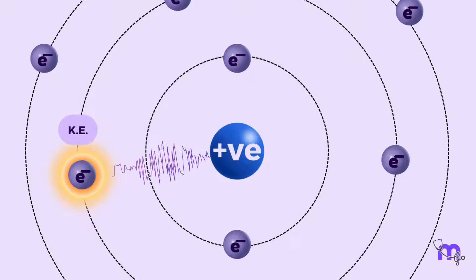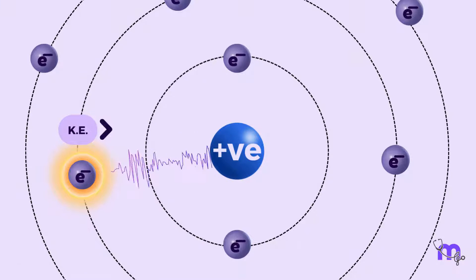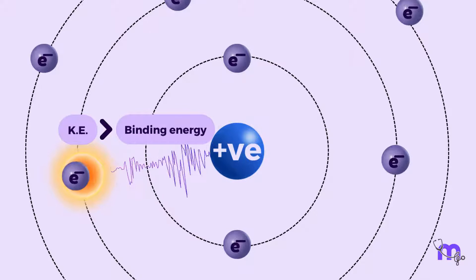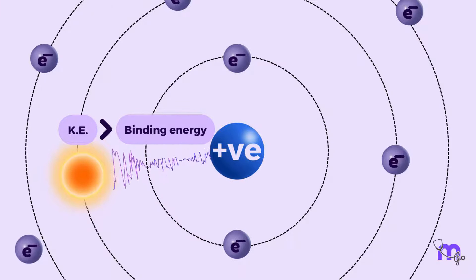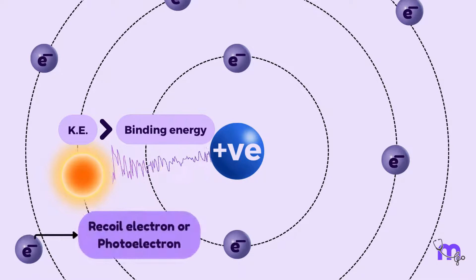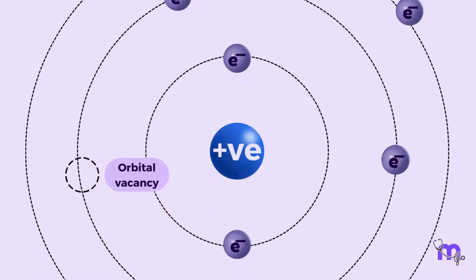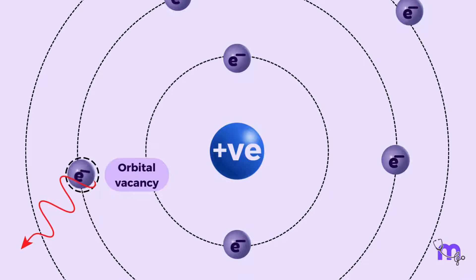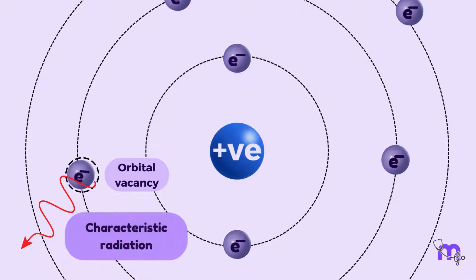The kinetic energy imparted to the electron is more than the binding energy, causing the electron to eject out of the atom. It is then called the recoil electron or the photoelectron. An orbital vacancy is now created, which is filled by an outer shell electron of a higher energy state. During this reshuffling, energy is released in the form of characteristic radiation.